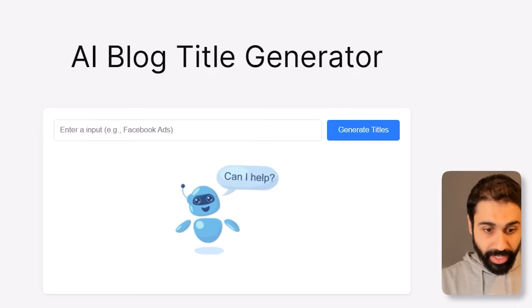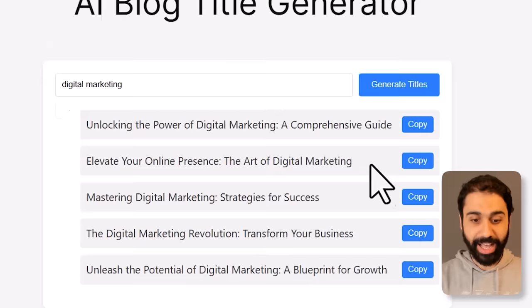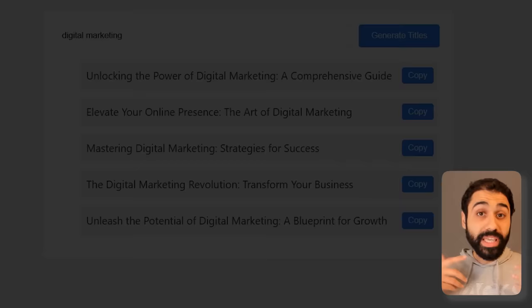Let's open the page — and here we are, we have the AI Blog Title Generator on our WordPress website. Let's test it: say 'digital marketing', generate titles — awesome! Now we have three questions we want to answer.